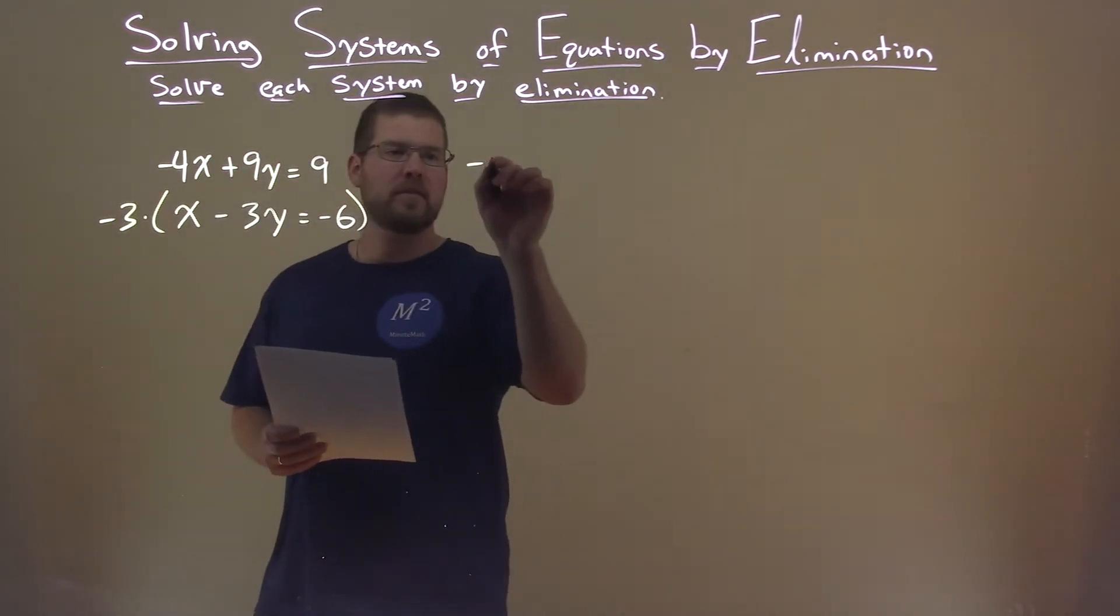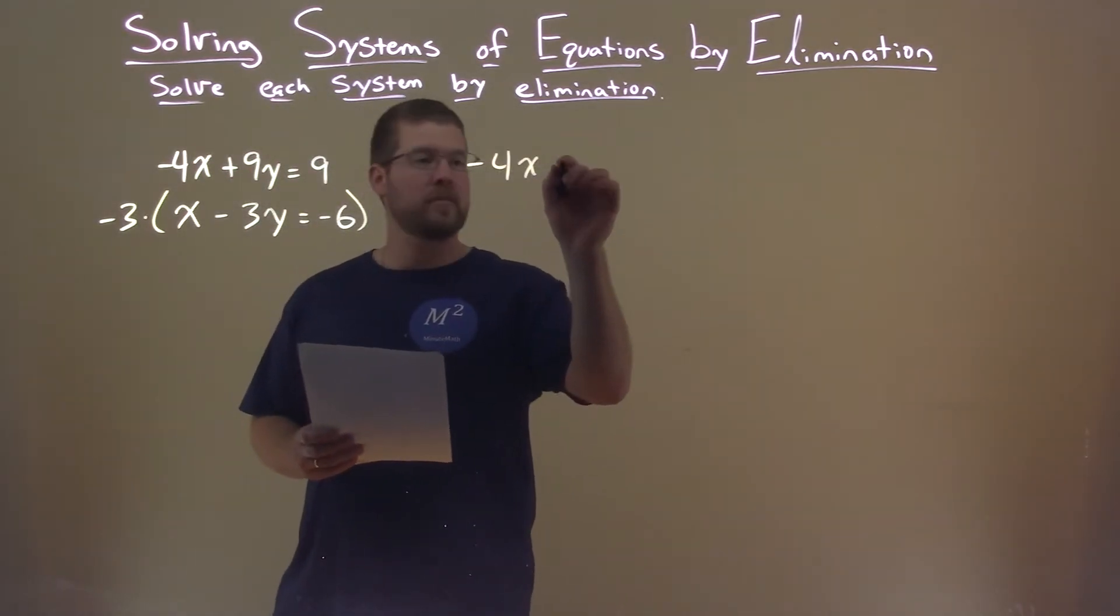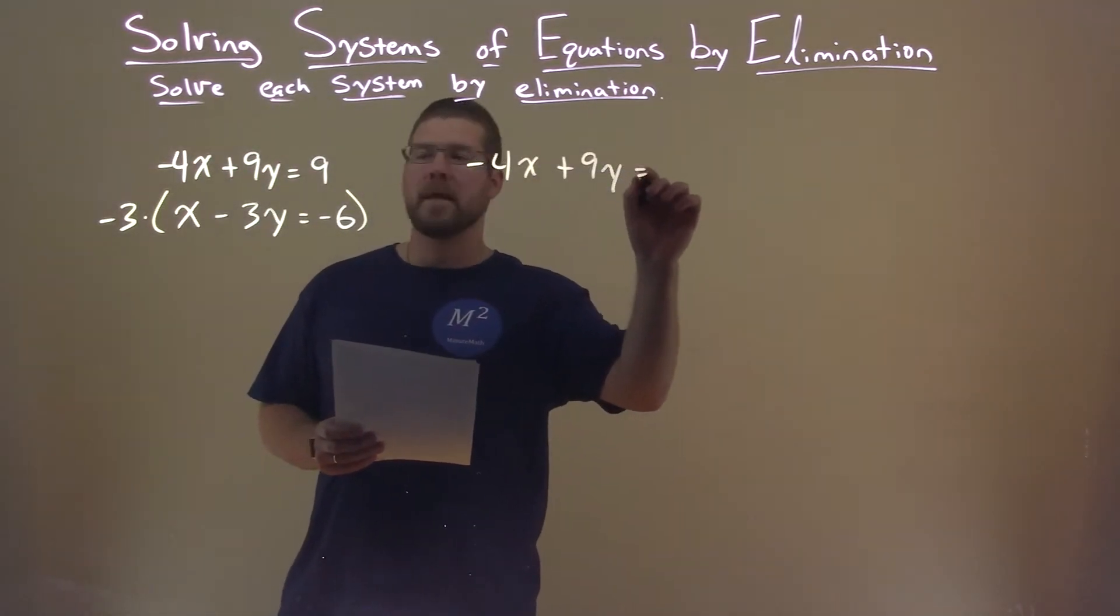So I multiply both sides by a minus 3 here. The top equation stays the same, minus 4x plus 9y equals 9.